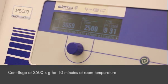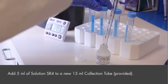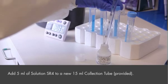Centrifuge at 2,500 times G for 10 minutes at room temperature. Add 5 mls of solution SR4 to a clean 15 ml collection tube.